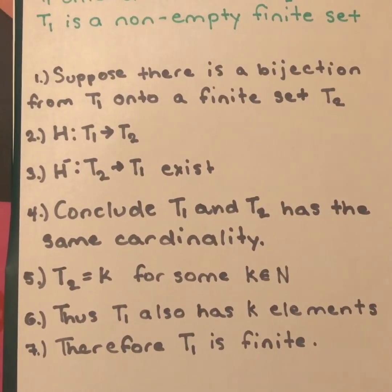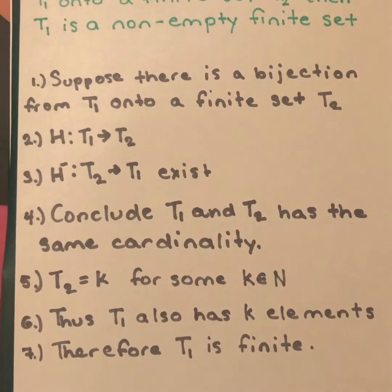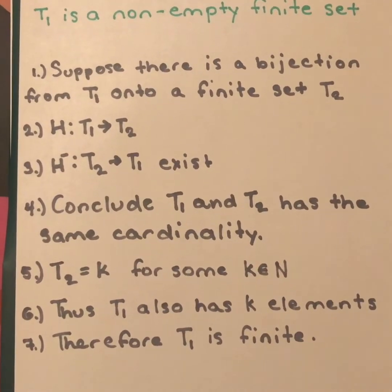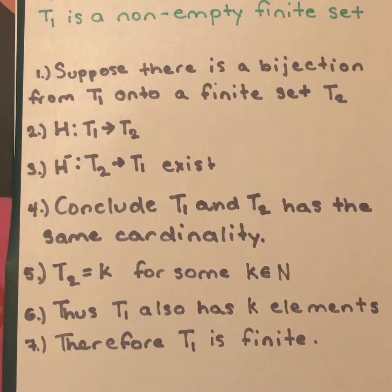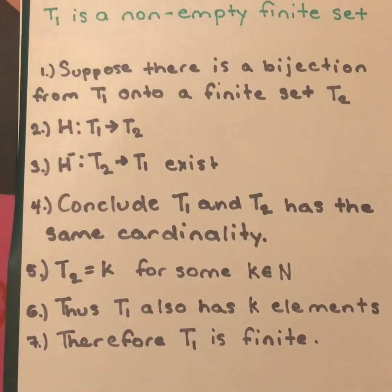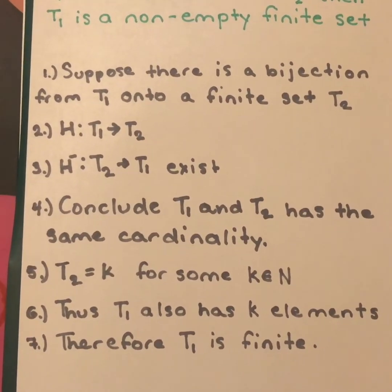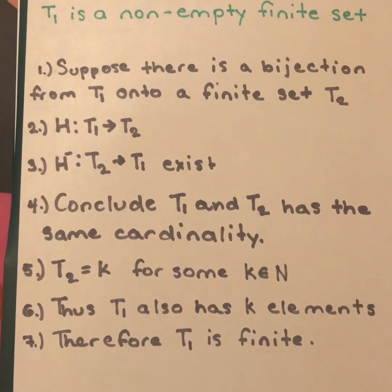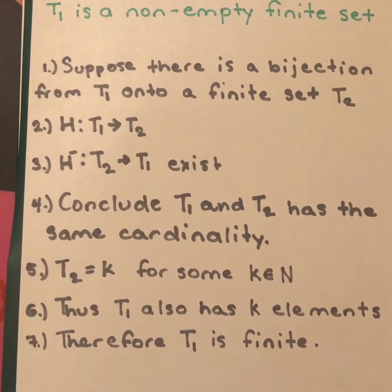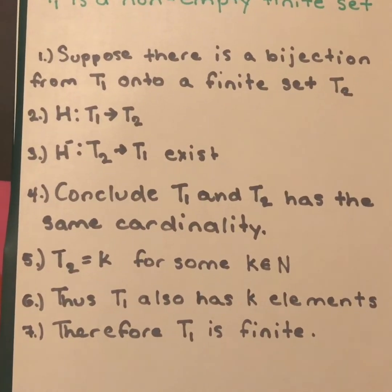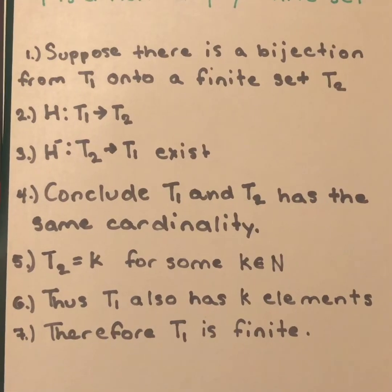T2 is finite. So, by definition, T2 has k elements for some k elements of the natural numbers. Therefore, T1 also has k elements for some k elements of the natural numbers. And thus T1 is a finite set by definition.